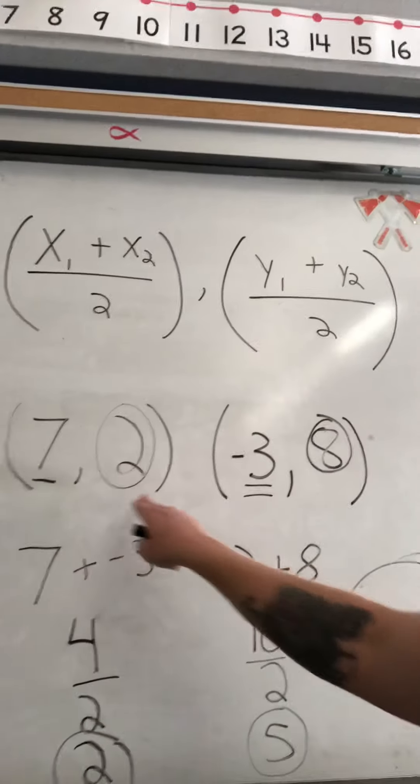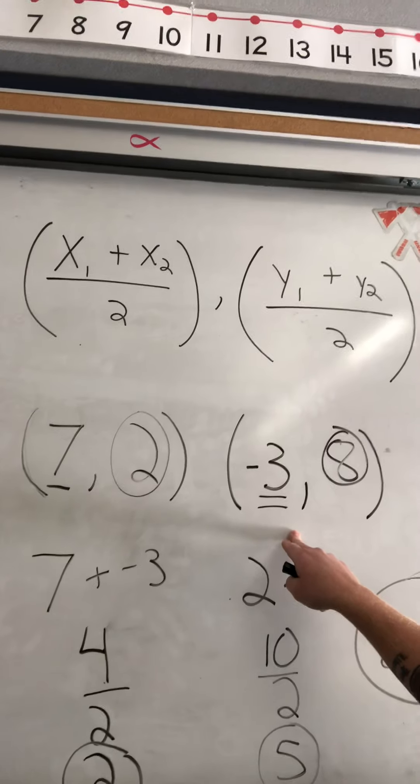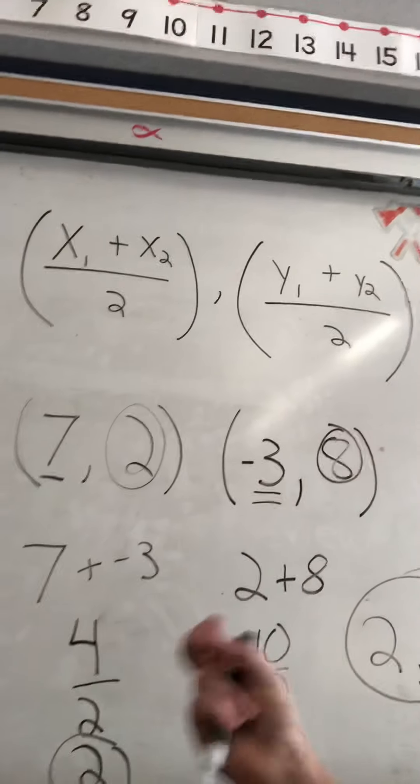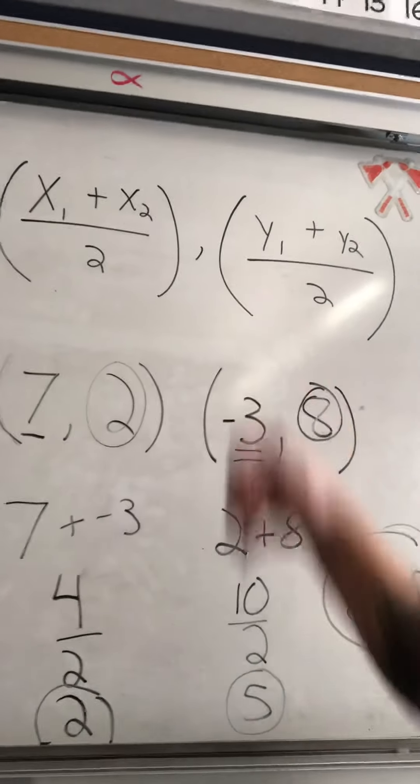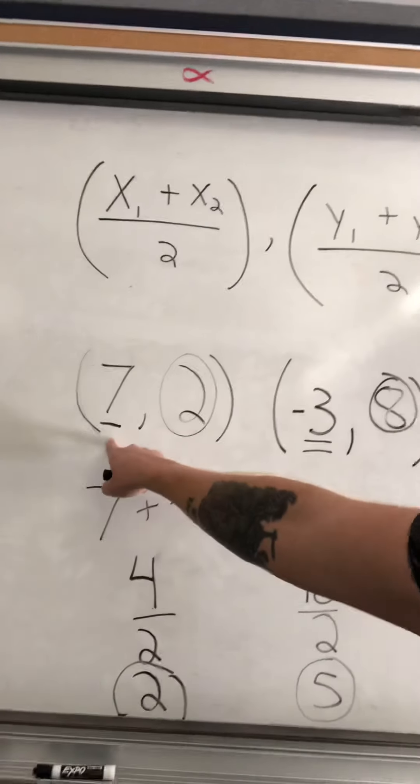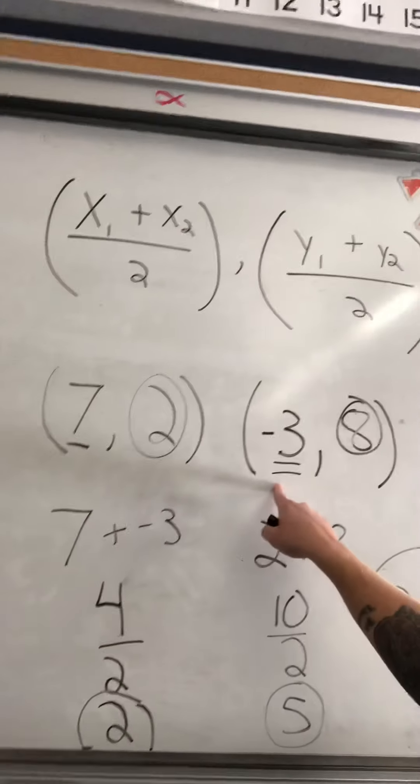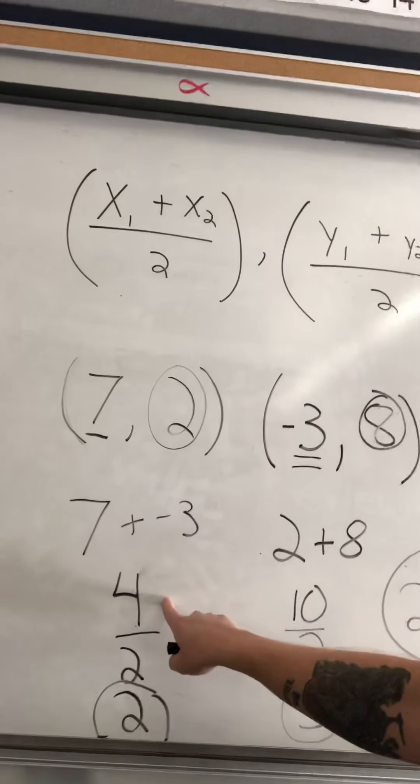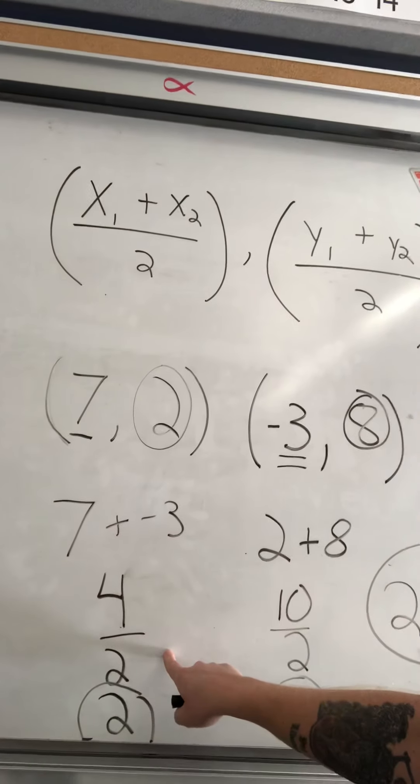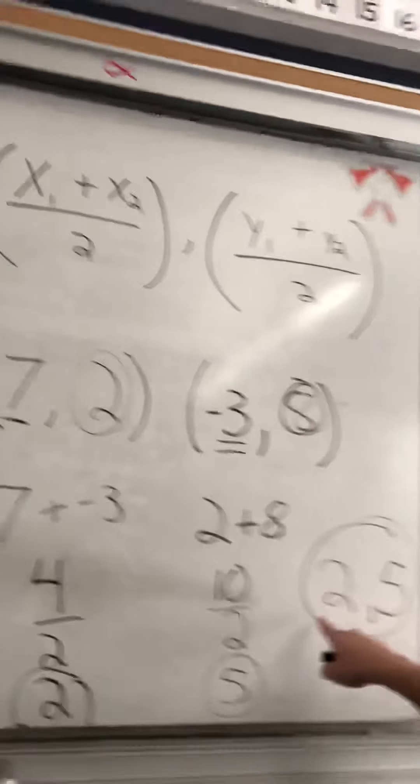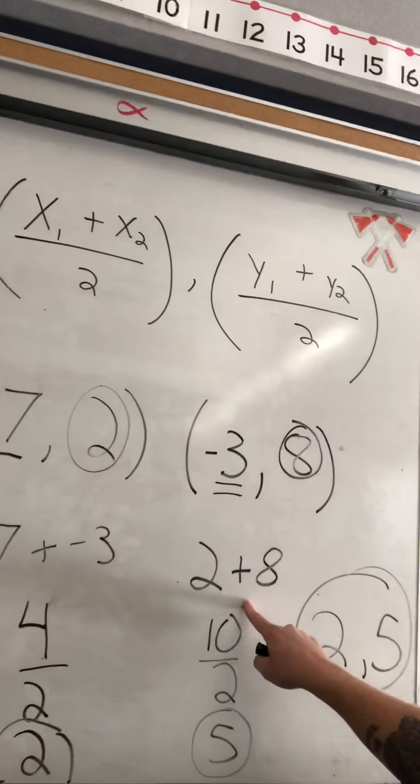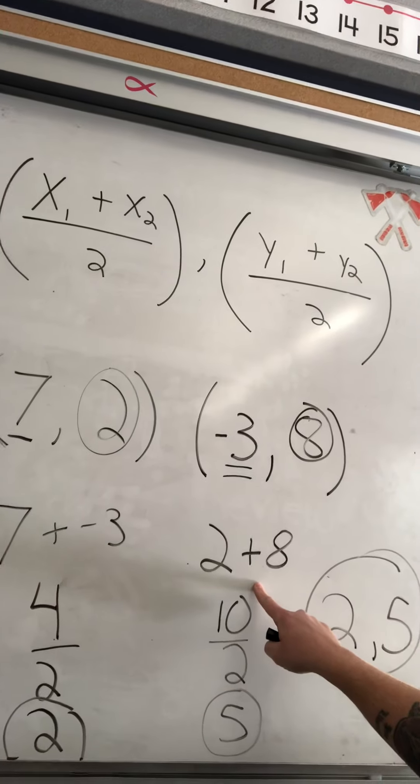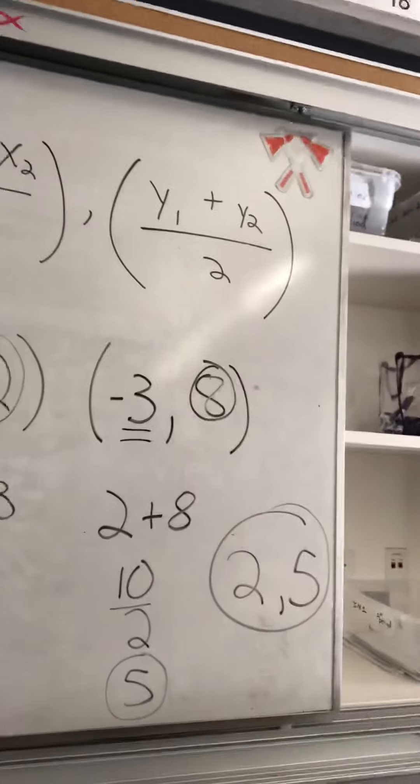So, basically, to sum it up, I have two endpoints. 7 comma 2. Negative 3 comma 8. I need to find the point that is on the middle of that line. Between those two points, there's a line. What's the middle of that line? Well, I'll use my midpoint formula. I used my 2 X values. 7 and negative 3, which is basically minus. 7 minus 3 is 4. 4 divided by 2, or following the formula, is 2. And that's where I put my X value right there. Same thing with the Y's. 2 and 8. Well, I'm going to add those together because there's no minus sign. That's 10. 10 divided by 2 is 5. My final answer is 2 comma 5.